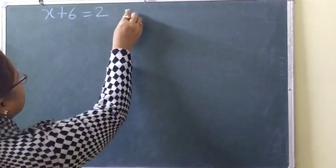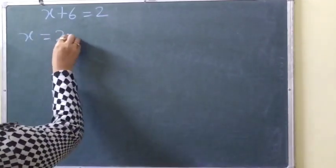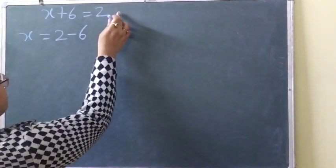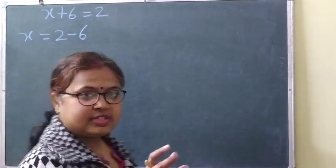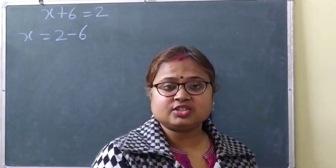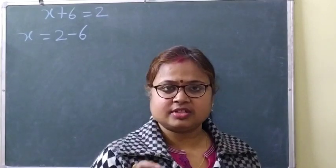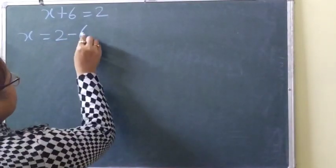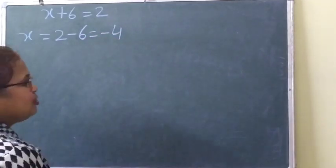So x plus 6 equal to 2 means x will be equal to 2 minus 6. This plus 6 will come to this side and it will become minus sign. Side change, sign change — in simple language. So plus 6 becomes minus 6, and the answer will be minus 4.